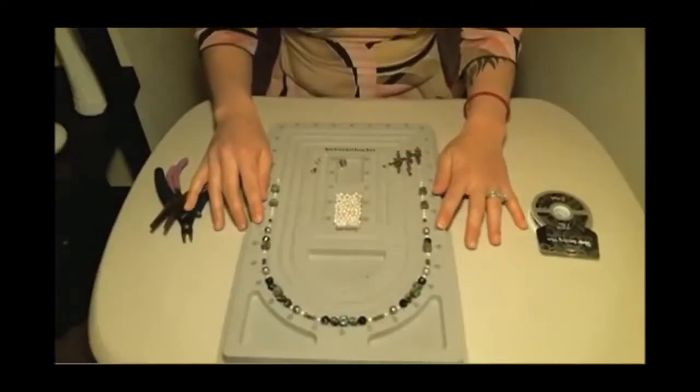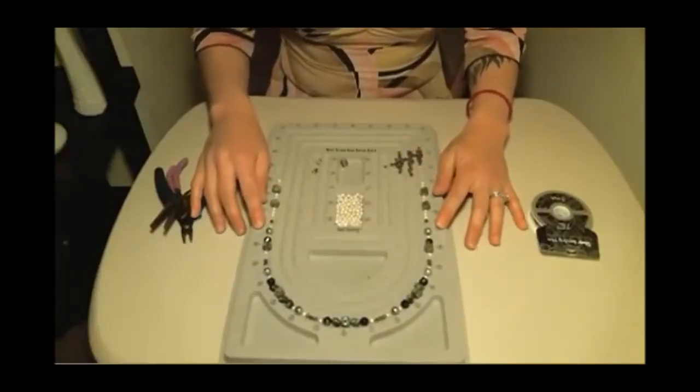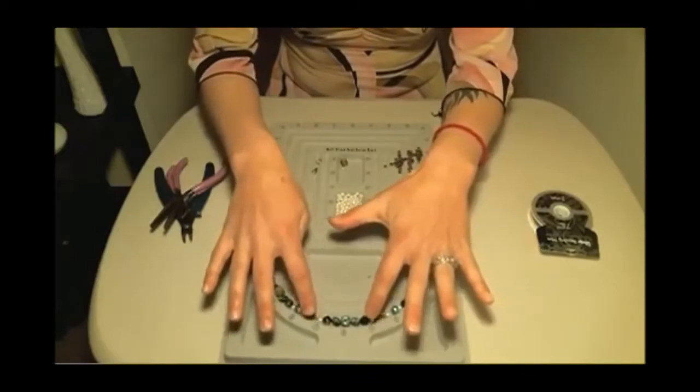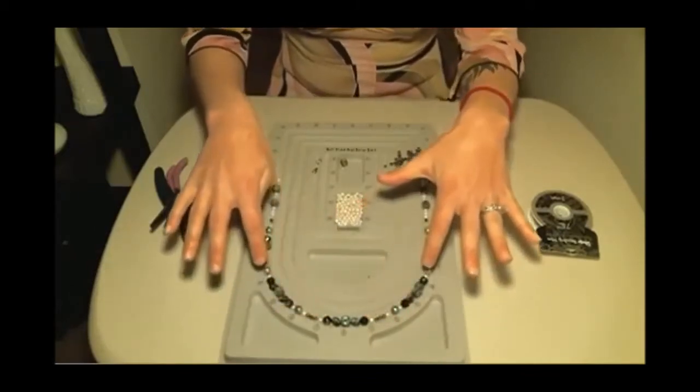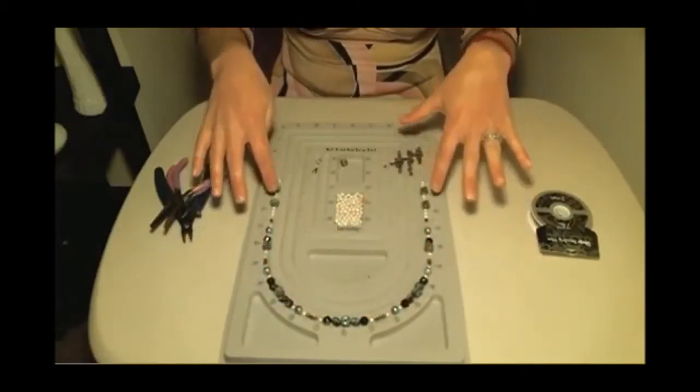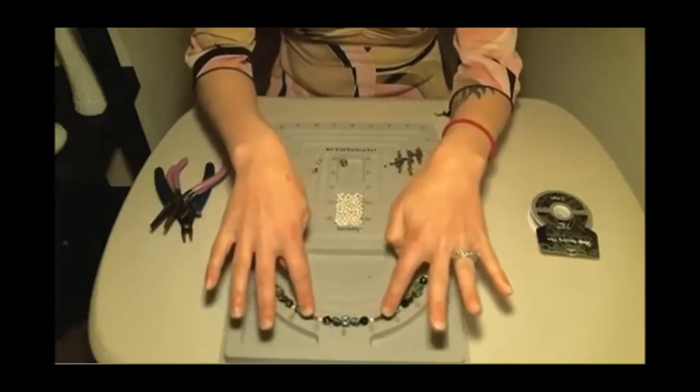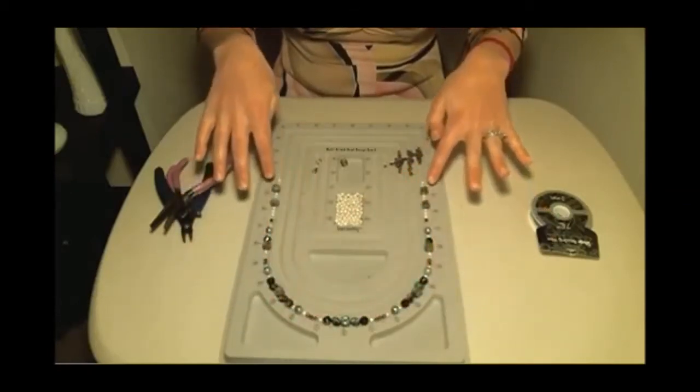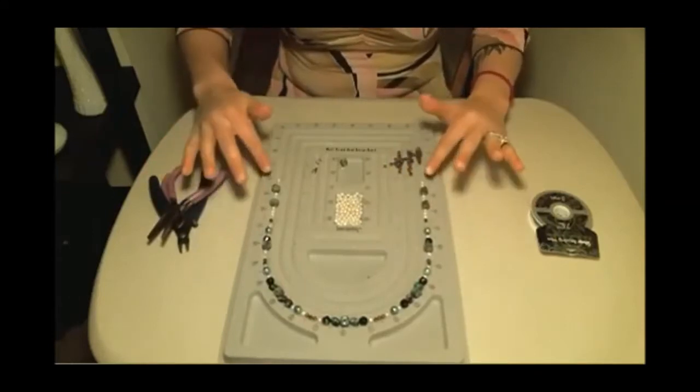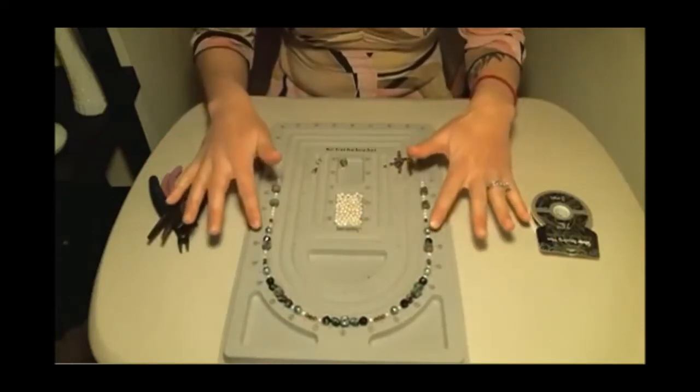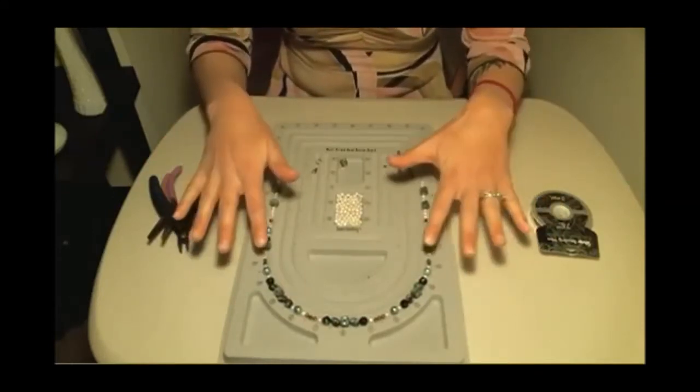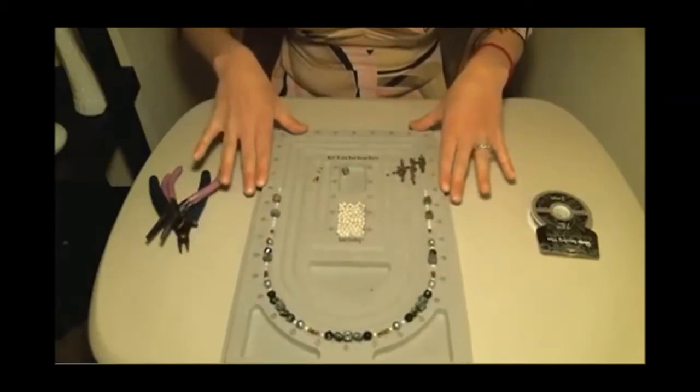I have my beads set up in the order that I want them to be on the necklace. Each side, if you can see, is symmetrical. It's exactly the same. I have the beads patterned the same exact way on each side. I like patterns. My necklace looks really long, but I do have it a little bit spaced out, just so it's easier to kind of see.